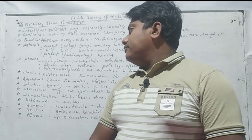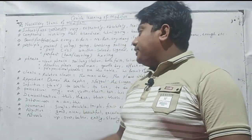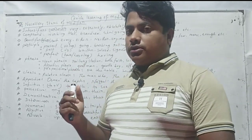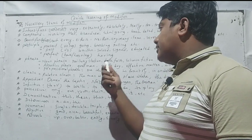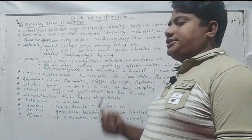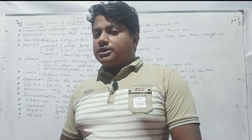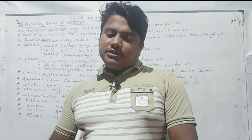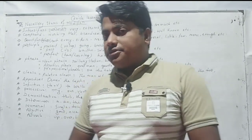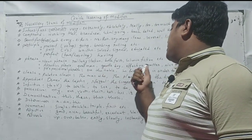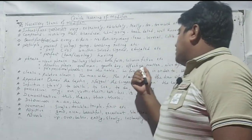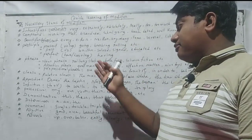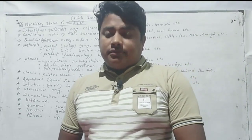A noun phrase consists of two nouns placed together giving a single meaning — these are compound noun phrases. Examples: railway station, book fair, science fiction. Then adjective phrases: good man, gentle boy, effective matter, nice toys — these are adjective phrases.